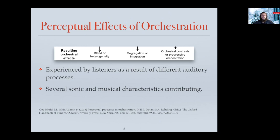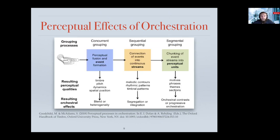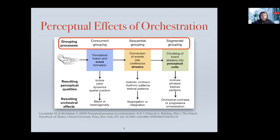These orchestral effects — such as blend, segregation, and contrast — are experienced by listeners as a result of several auditory processes. Research has suggested that many sonic and musical characteristics contribute to shaping these effects. Goochard and McAdams define three categories for orchestral effects following three auditory grouping processes: blends are the result of concurrent grouping, where there is perceptual fusion and event formation; sequential grouping makes connection of events into continuous streams, which leads to segregation or integration; and segmental grouping, where there is chunking of event streams into perceptual units, which leads to contrast or progressive orchestration.